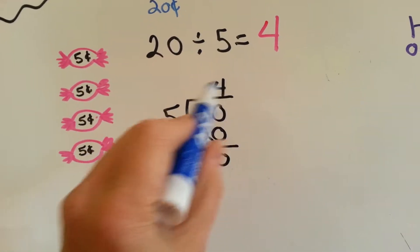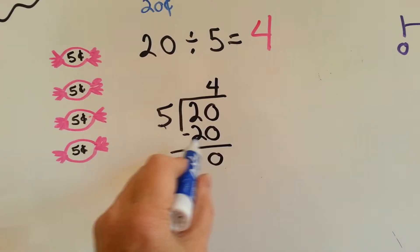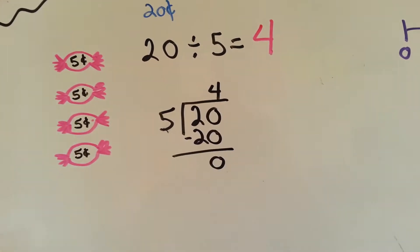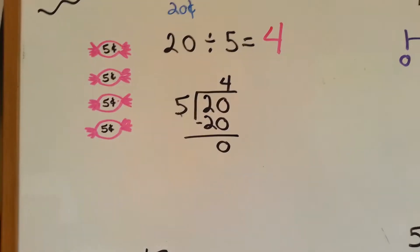So you put it above the 1's place of the 20. Then you do the multiplication of 5 times 20, you put it here, you do your subtraction, and you get 0, and you're finished with that problem.